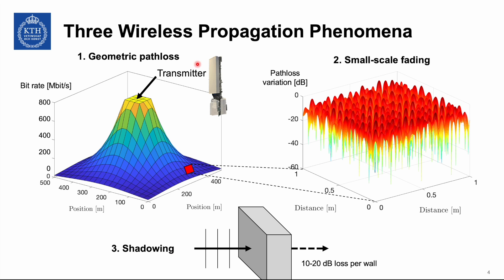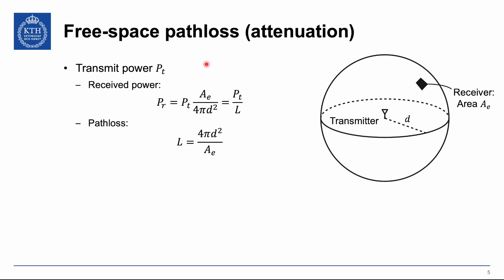In this video we will focus on geometric path loss. Consider a simple free-space path loss scenario: a transmit antenna sends a signal spreading out over the surface area of a sphere. When the receive antenna is at distance d from the transmitter, it has a certain effective area A_e. The fraction of transmitted power reaching the receiver equals the receive antenna area divided by the sphere surface area 4πd². We express the path loss L as 4πd² divided by the effective area, and the received signal power equals the transmitted power divided by the path loss.